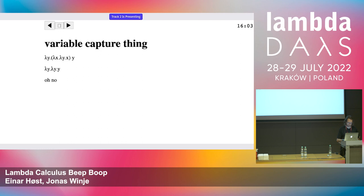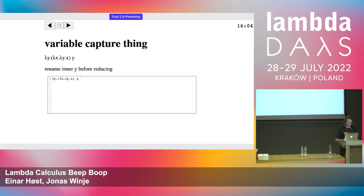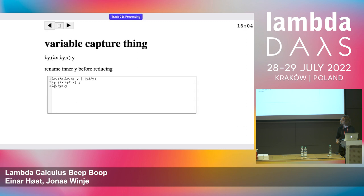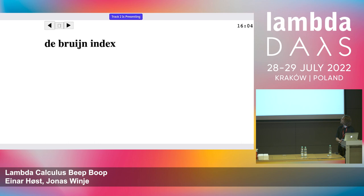There's also the variable capture problem — a technicality but an additional detail. Sometimes you have to rename variables when evaluating expressions. If you take this expression with lambda x and pass in a y and do it naively, you end up replacing x with y, and then the y gets bound by the wrong variable due to a name collision. So you have to rename variables to avoid shadowing, giving you the correct result where the outer y still points to the outer binding.